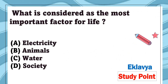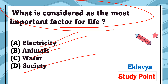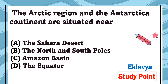Question 2: What is considered the most important factor for life? Options are electricity, animals, water, and society. Obviously the answer is water — jal hi jeevan hai (water is life). So option C is correct.